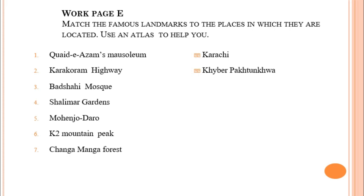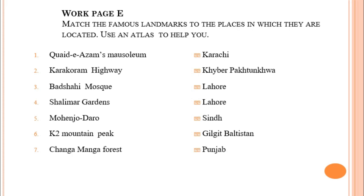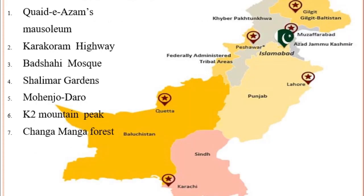Then we have Badshahi Mosque and Shalimar Garden — both of these are located in Lahore, Punjab. On number five we have Mohenjo-daro, which is an ancient site located in Sindh. Our sixth option is K2, the second highest peak in the world — K2 mountain peak is located in Gilgit-Baltistan. And last is Changamanga Forest, a man-made forest located in Punjab.